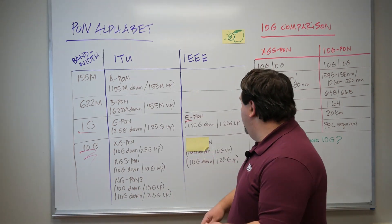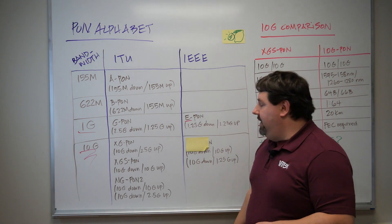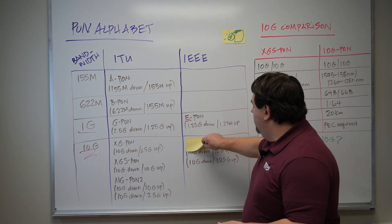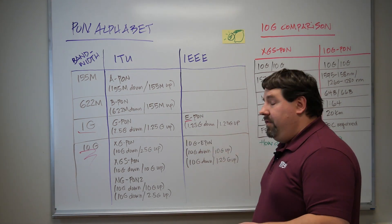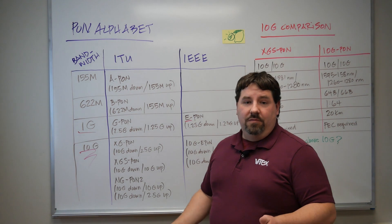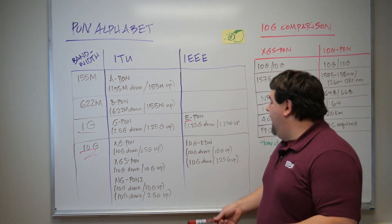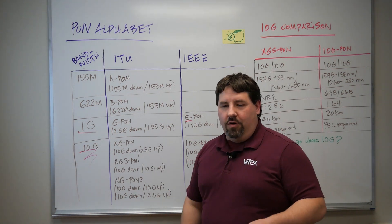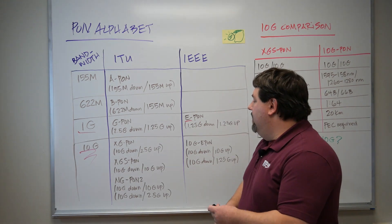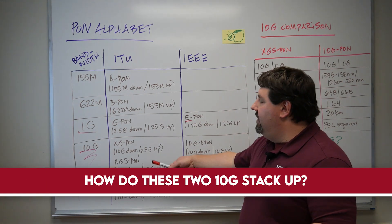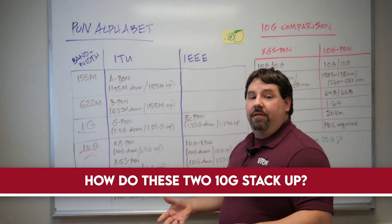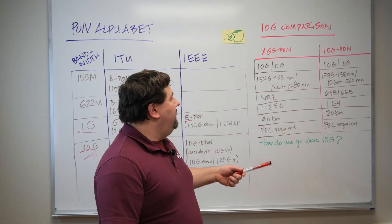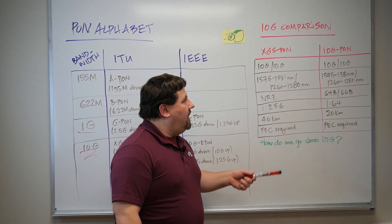So what was the IEEE doing during this time? Well, they liked numbers, so they stayed with that and just added a 10 — so now they're also at 10 gig with 10G-EPON. But how do these two 10 gig standards stack up against each other? Let's jump over and see how everything shakes out with a quick 10 gig comparison.